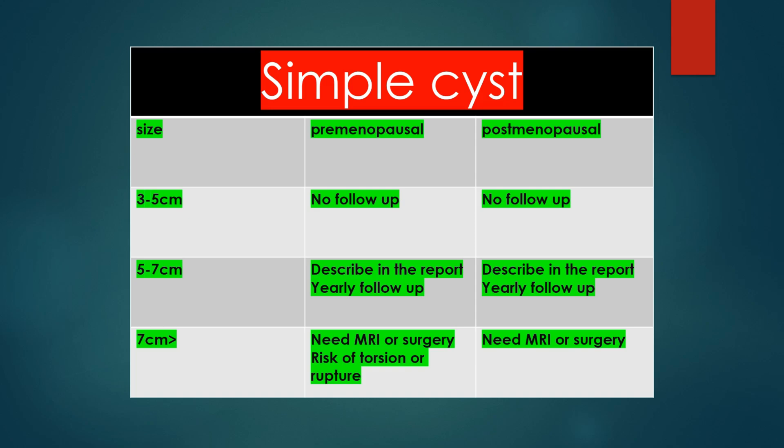Management of simple cysts in premenopausal and postmenopausal women is almost the same. If size is 3–5 cm, no follow-up needed. If size is 5–7 cm, describe in the report and yearly follow-up is needed. If size is more than 7 cm, MRI or surgery may be needed due to risk of torsion or rupture in premenopausal women.